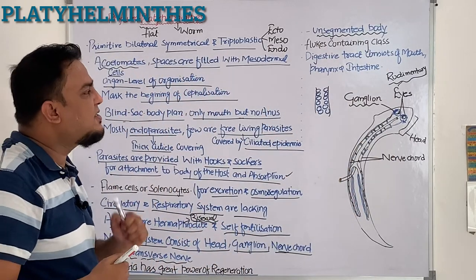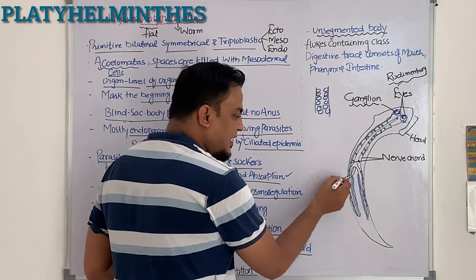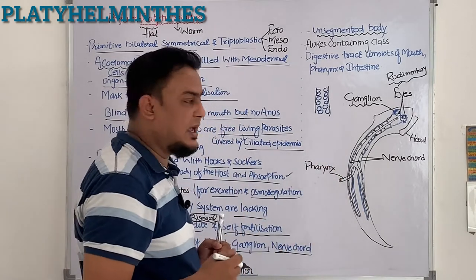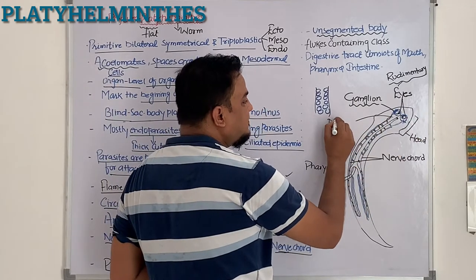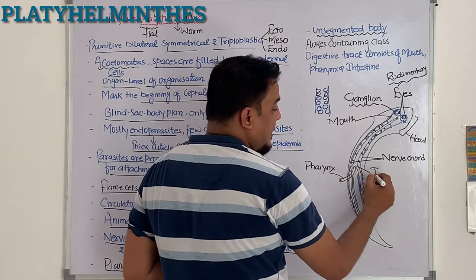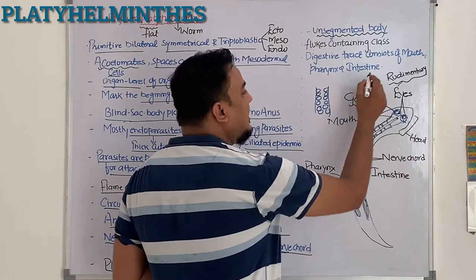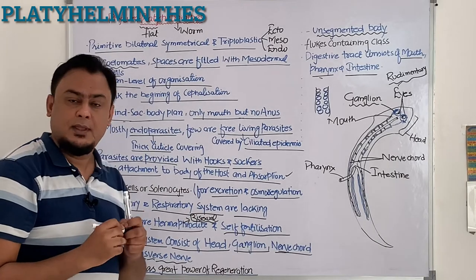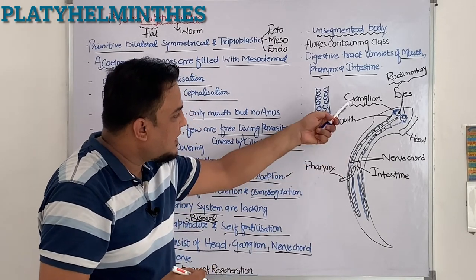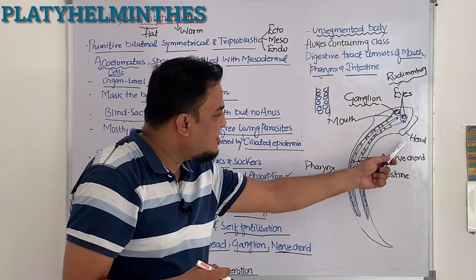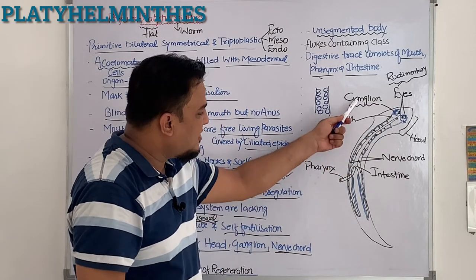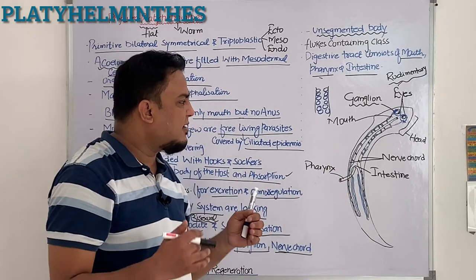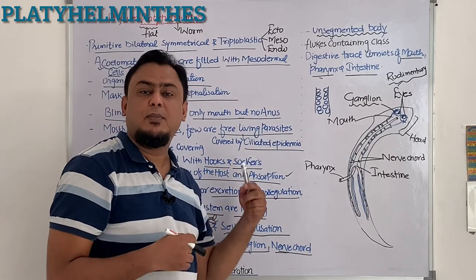Now regarding the digestive tract: the pharynx part of Planaria helps in collecting food. The mouth is there, and the intestine is also present. So the digestive system has mouth, pharynx, and intestine — all visible in Planaria. The nervous system has ganglion, eyes, head, and nerve cord, while the digestive system has mouth, pharynx, and intestine. These are very important components to explain Platyhelminthes.